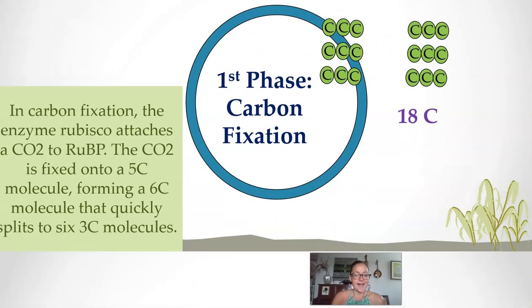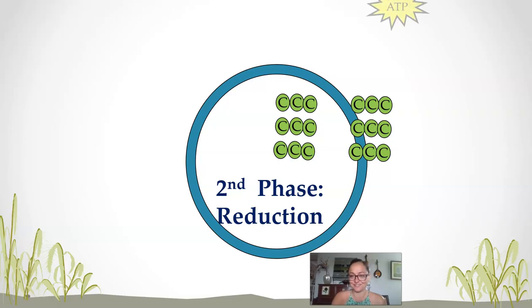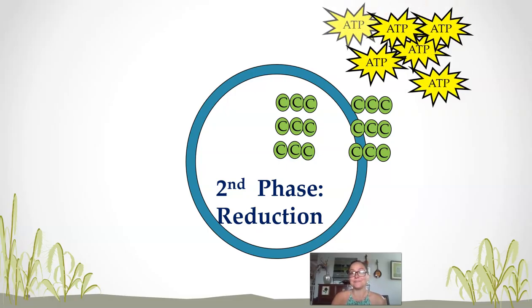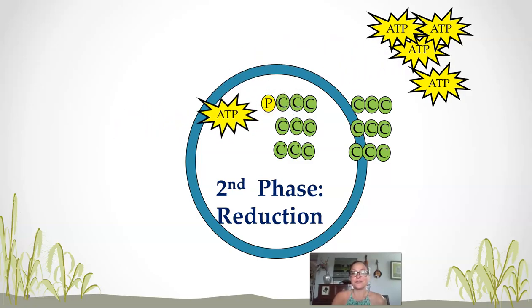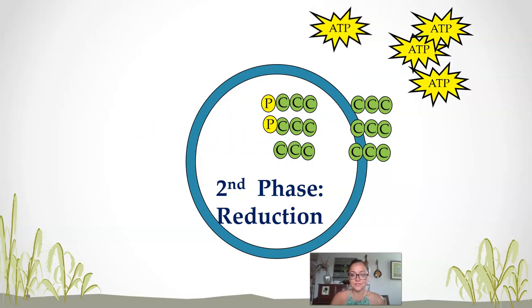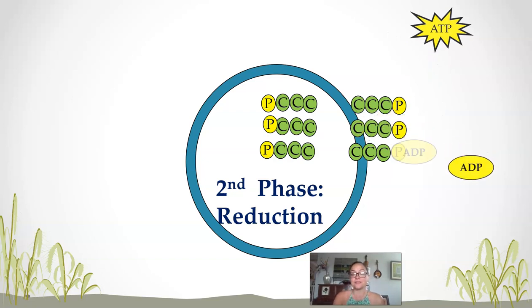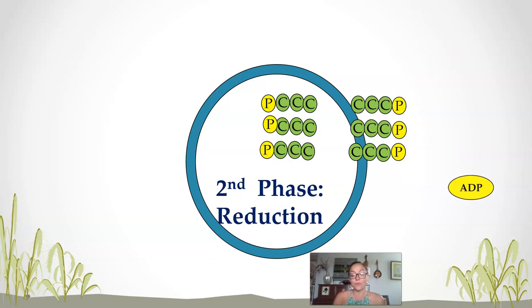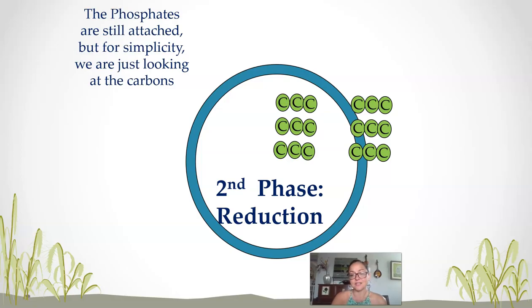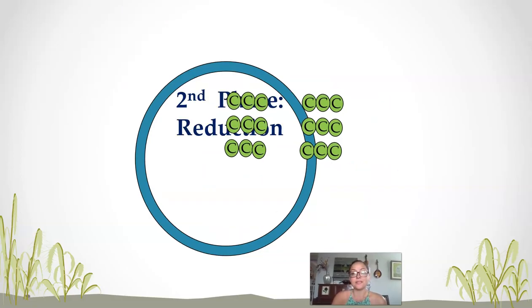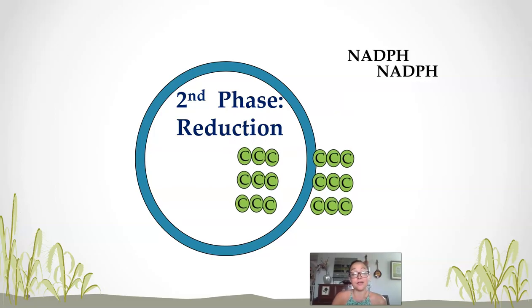In phase two, the reduction phase, we invest ATP from the light reaction into a series of chemical reactions and phosphorylate those carbon molecules — this happens six times. We also take advantage of the electrons. When we move energy in the cell, we move it in the form of electrons. We take those reduced electron carriers, the NADPHs, and we're going to oxidize the electron carriers while reducing these molecules.